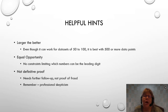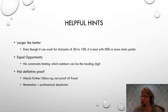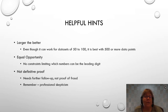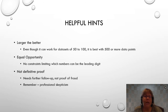Some other helpful hints: larger is better. You can get a distribution with 150 to 200 data points, but it is best to have 500 or more. There should be no constraints limiting what could be the leading digit — equal opportunity. And I can't emphasize enough: finding a data set that does not meet Benford's Law is not definitive proof of fraud. You need your professional skepticism. You want to be suspicious and do further investigation, but you don't want to jump to conclusions too quickly.